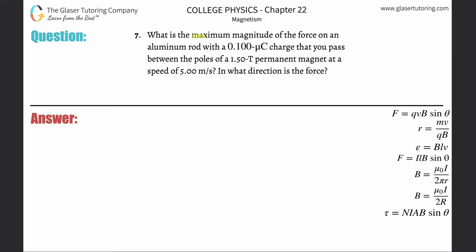Number seven. What is the maximum magnitude of the force on an aluminum rod with a 0.1 micro coulomb charge that you pass between the poles of a 1.5 tesla permanent magnet at a speed of 5 meters per second?